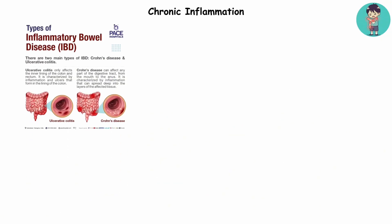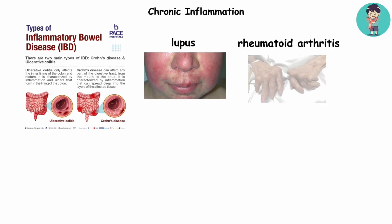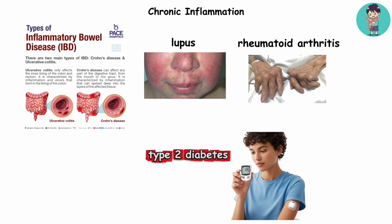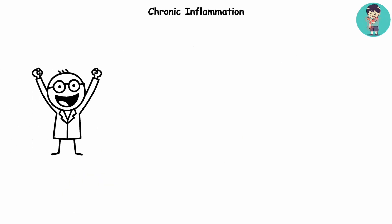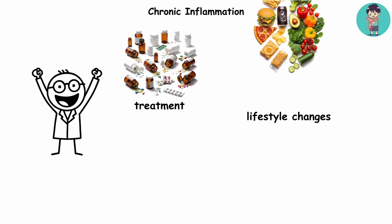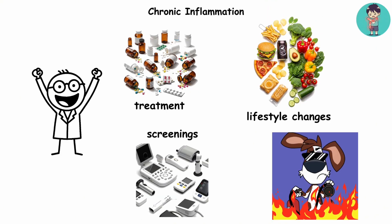It's not just IBD. Autoimmune diseases like lupus or rheumatoid arthritis can light similar fires, while type 2 diabetes now shows up in 20-somethings, creating a metabolic storm. Here's the good news. Controlling inflammation through treatment, lifestyle changes, and screenings is like finally dousing that campfire.